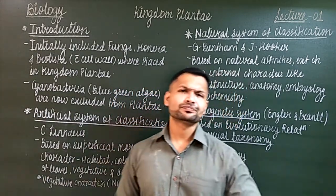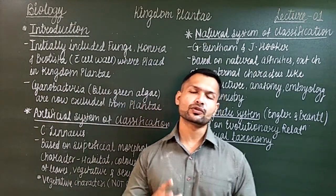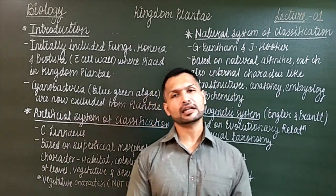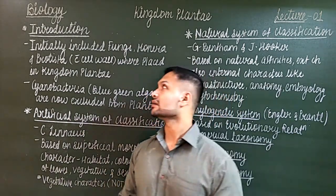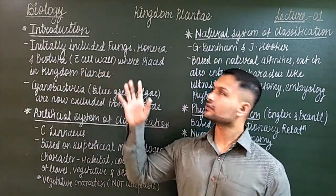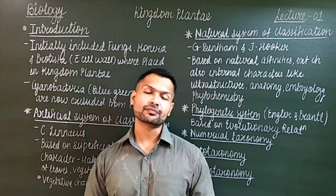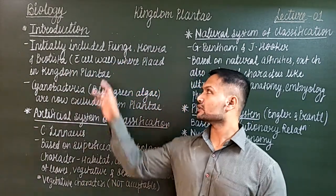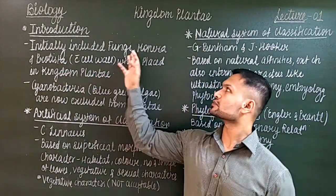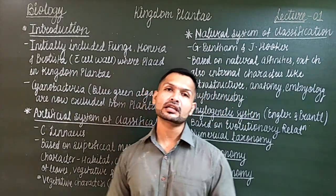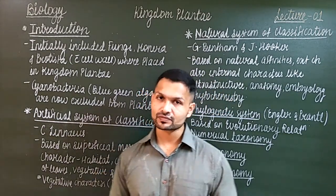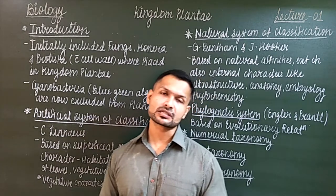The first system of classification was the two kingdom system given by Carlos Linnaeus. It already had Plantae and Animalia. But there was a problem because fungus, the entire kingdom fungus, some members of Monera and Protista were also included which had cell walls. Protista had cell walls, whereas Monera and fungus were already included in Kingdom Plantae by Carlos Linnaeus based on the cell wall factor, but there are quite significant differences between them.